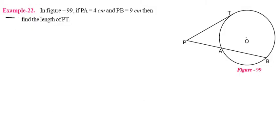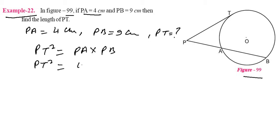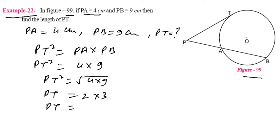Example 22: In figure 99, PA is 4 centimeters and PB is 9 centimeters. Find the value of PT. Our formula is PT square equals PA into PB. So PT equals square root of 4 into 9. Square root of 4 is 2 and square root of 9 is 3. So PT equals 6 centimeters. That is your answer.